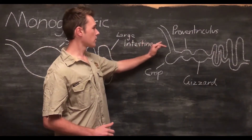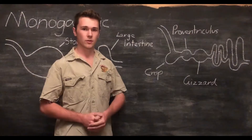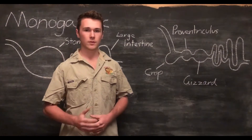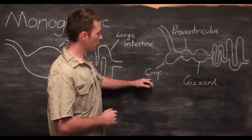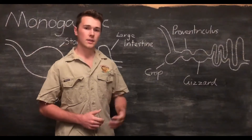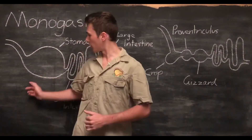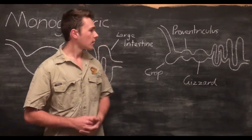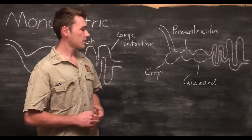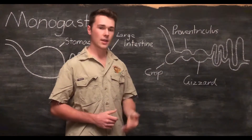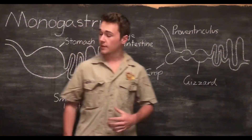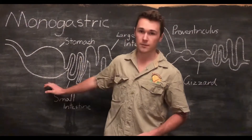In poultry, food still passes through the oesophagus and moves into the crop. The crop acts as a storage system and secretes mucus which helps to soften the feed. Food then moves from the crop into the proventriculus, which acts as the true stomach for the monogastric system of chickens and birds. It secretes gastric fluids containing hydrochloric acid and enzymes, performing the exact same function as the stomach in other monogastric animals.